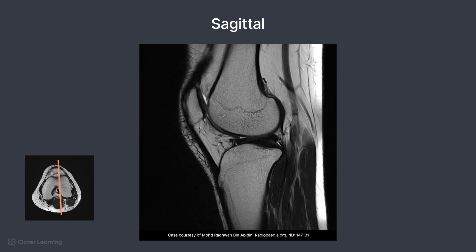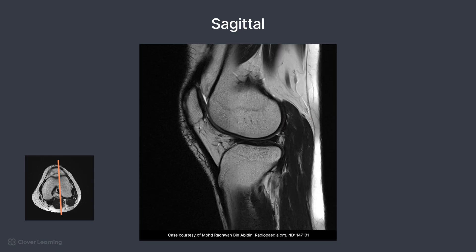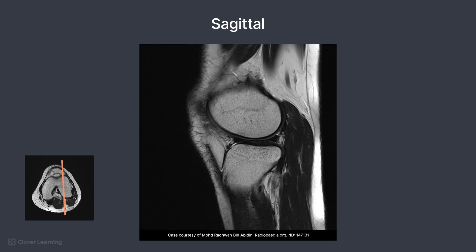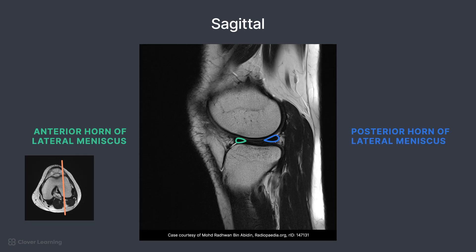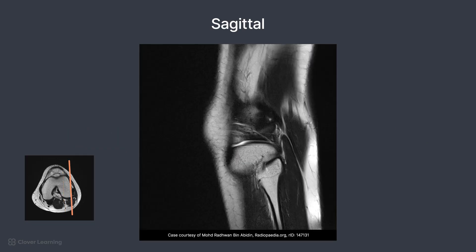As the slices continue laterally, the lateral condyle emerges. Again, the meniscus is demonstrated here — this time it is the anterior and posterior horn of the lateral meniscus. On this final slice, the head of the fibula is seen, confirming this is the lateral side of the knee.